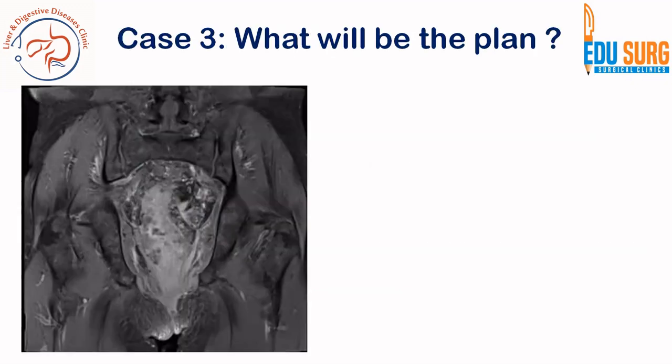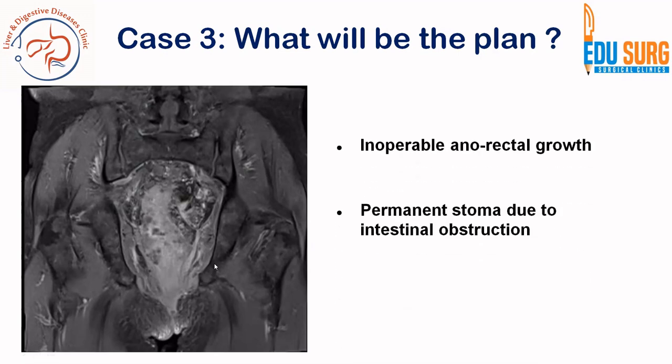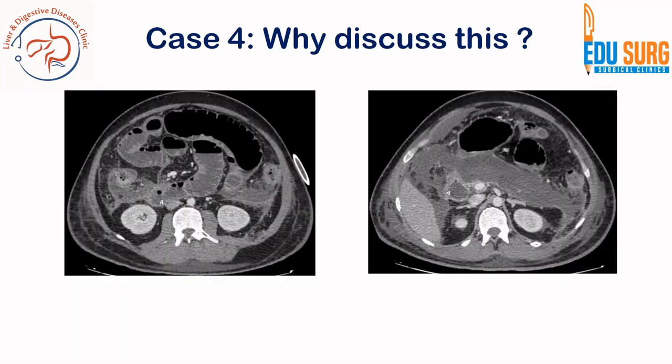Here is another case we have managed. You can see extensive disease on this coronal MRI image — the entire pelvis is filled with disease. This is an inoperable growth, and though the patient has distal intestine, there is no way to resect this tumor. The patient is going to end up with a permanent stoma due to intestinal obstruction. This is another way in which rectal cancer can present and require a permanent stoma.